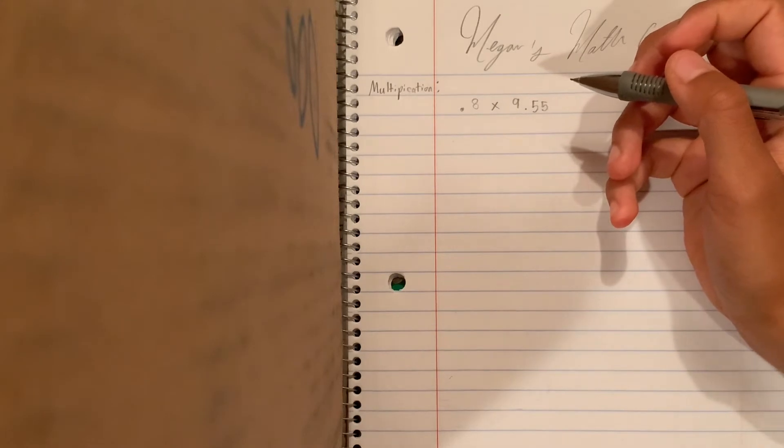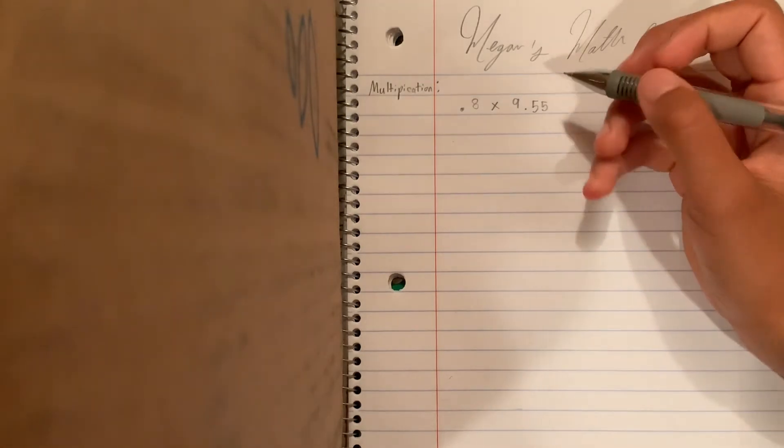So, fun thing about multiplication is unlike subtraction or addition, it doesn't really matter that much which one you put on top. So I like to do the bigger number, that's just me. So I'm gonna put 9.55 and 0.8 down here.